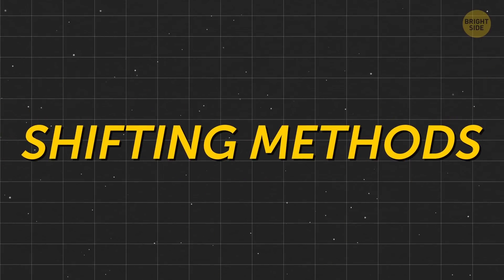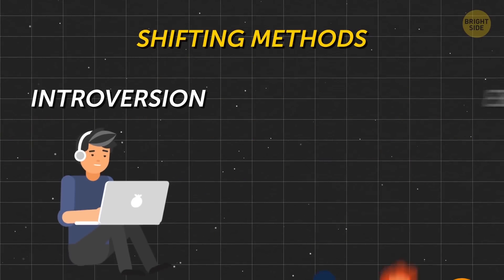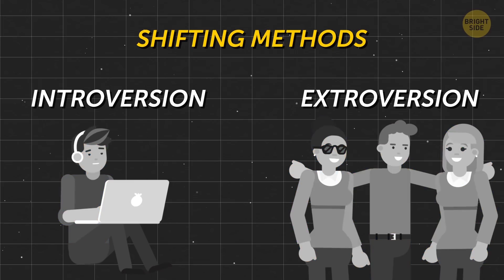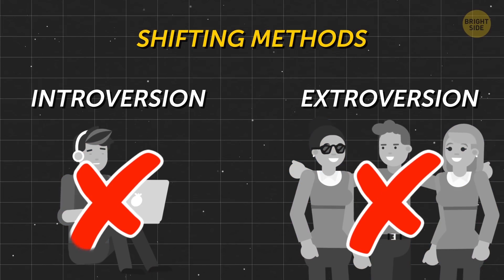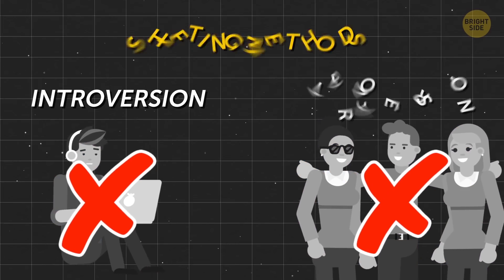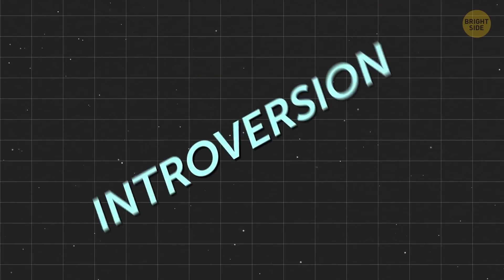Each of these events has two shifting methods: introversion and extroversion. No, I'm not talking about psychology – these are geologic terms. So let's start with the first one, introversion.